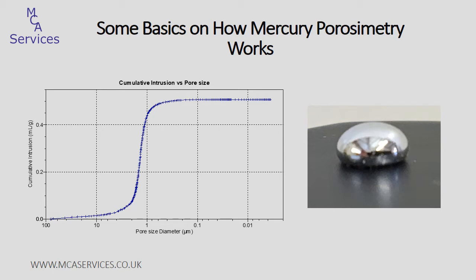Mercury porosimetry works because mercury is a non-wetting liquid. It has a contact angle of greater than 90 degrees, as can be seen on the photo on the right-hand side. So in order for mercury to intrude into a pore, we must apply pressure. And as this applied pressure increases, mercury is forced into smaller and smaller pores.